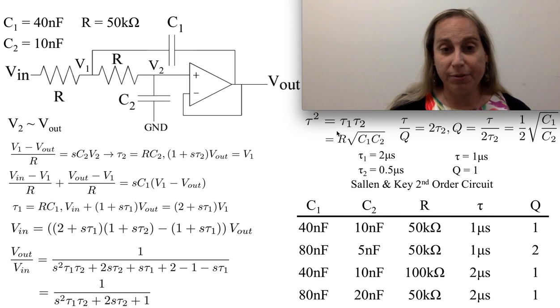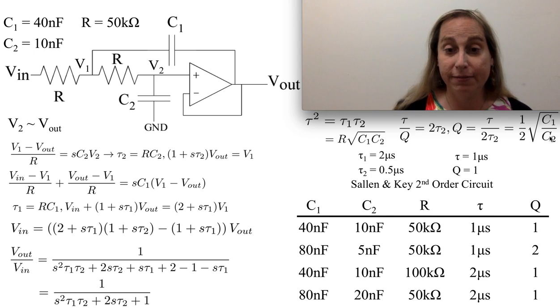And actually the expressions turn out to be fairly straightforward. The tau turns out to be proportional to R, and the geometric mean of C1 and C2. And interestingly enough, then Q turns out to be one half of C1 over C2. So that actually allows you to look at those two things and play off of them to get various transfer functions.